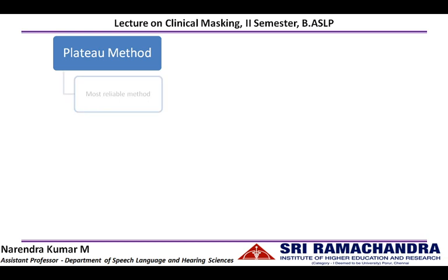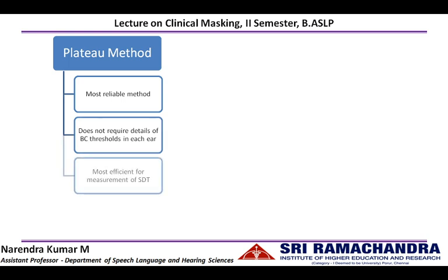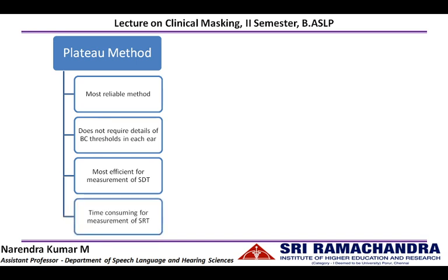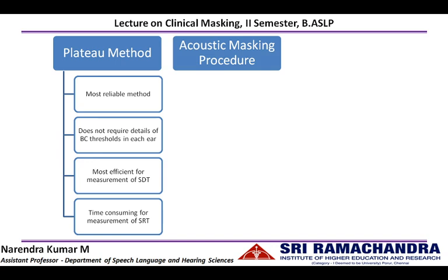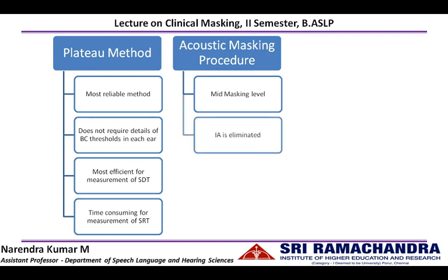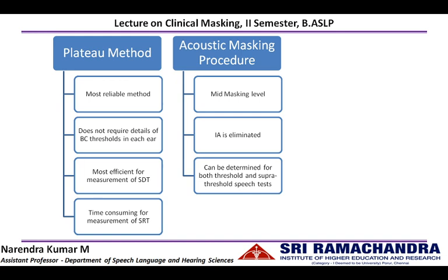In summary, the plateau method is the most reliable method to track the true threshold in the test ear. It does not require details of bone conduction thresholds or interaural attenuation and is most efficient for measuring speech detection thresholds. However, if recognition tasks are used, this procedure will be time consuming and may not be appropriate for masking in speech audiometry. The acoustic masking procedure involves various formulas to calculate masking levels; the most effective formula identifies the mid-masking level, which eliminates the effect of interaural attenuation and can be used for both threshold speech measurements like SRT and supra-threshold speech tests like speech recognition scores.